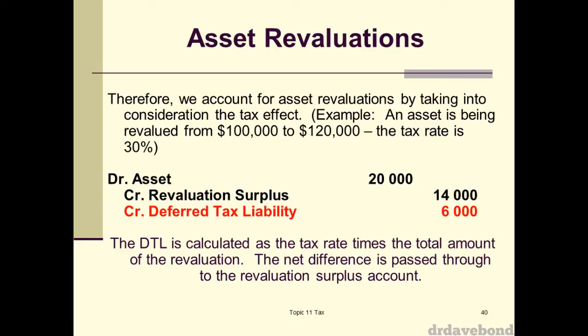Using those numbers, when we revalue the asset from $100 to $120, we debit asset $20 and normally credit revaluation surplus $20. But we're also picking up that if we sold that asset immediately - for accounting purposes we'd debit cash $120 and credit asset $120, making no accounting profit - but for tax purposes we have an asset of $100, a sale of $120, making a $20 taxable profit, and we pay $6 in tax on that. Even though we haven't sold it yet, if we were to sell it at $120 we'd have to pay $6 in tax. So on revaluation, we've got to pick up that difference as a deferred tax liability.